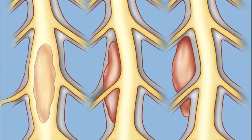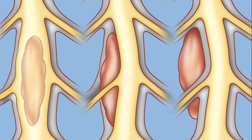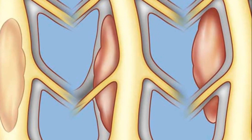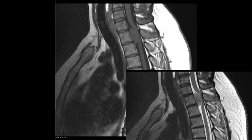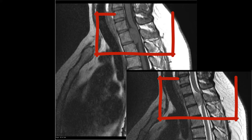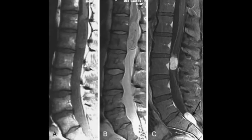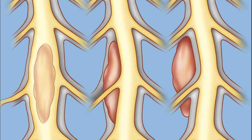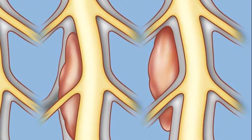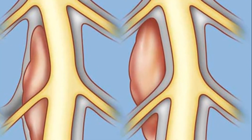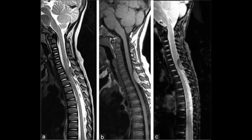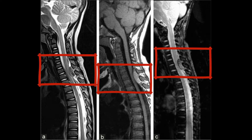The next type is extramedullary. There is intradural extramedullary, which means it is in the intradural space. Here is an example of an intradural extramedullary spinal tumor in the sagittal and axial views, shown in T1, T2, and T1 with contrast. There is also extradural extramedullary, which is outside the dural space and outside the meninges. Here is an example of an extradural extramedullary spinal tumor.